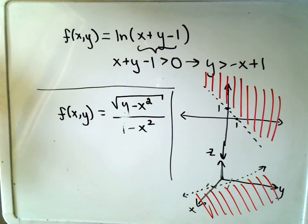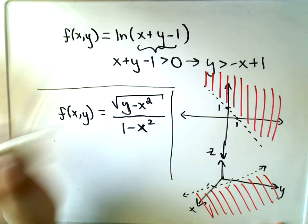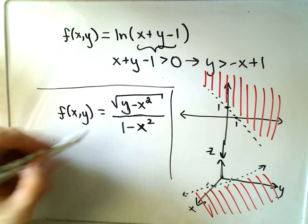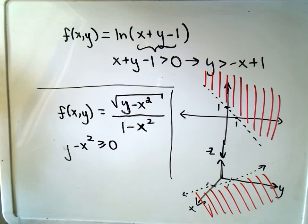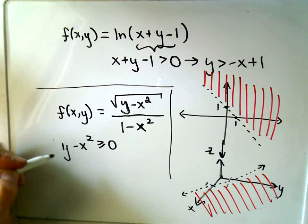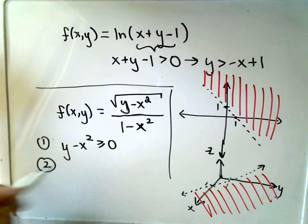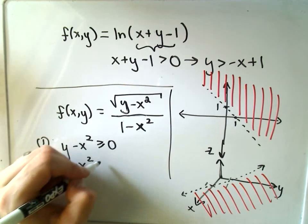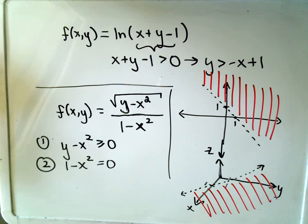So let's do this other one here real quick. Square root of y minus x squared over 1 minus x squared. Same basic idea. So we know the stuff underneath the square root has to be greater than or equal to zero. So that's one relationship we'll have to satisfy. And the other relationship we'll have to satisfy, we don't want the denominator to equal zero. So we'll figure out where it does equal zero and we'll throw out those particular values.